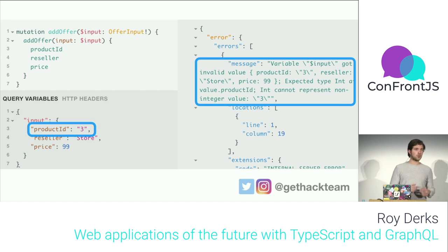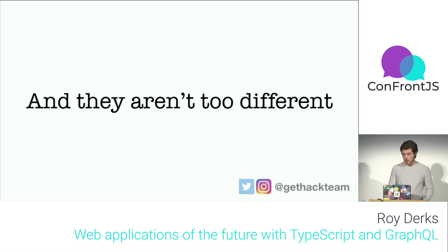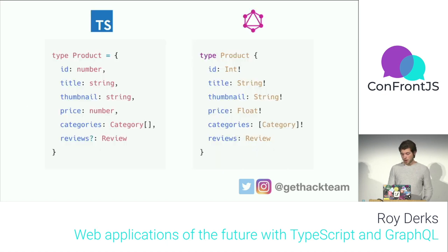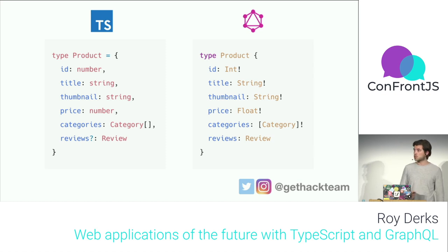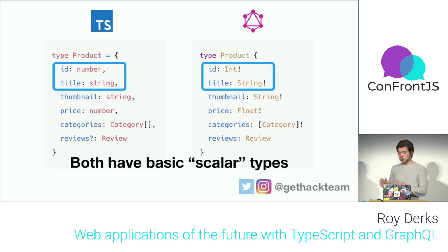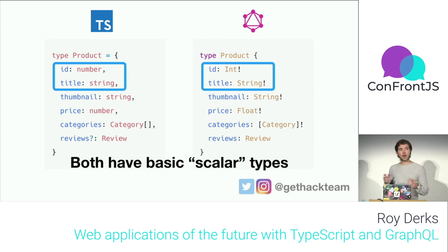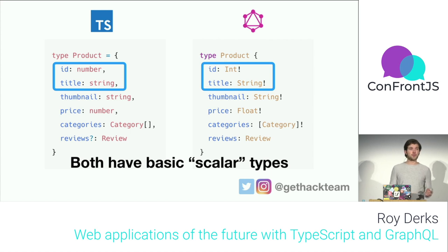The type systems from TypeScript and GraphQL aren't too different and can actually work together. On the left you can see a TypeScript type; on the right, one from GraphQL. They both have the same fields — ID, title, and relationships — and they look very much the same. They share scalar types: the basic types that come with the language. For TypeScript a field might be a number; in GraphQL it's an integer. You can also use float for different kinds of numbers.